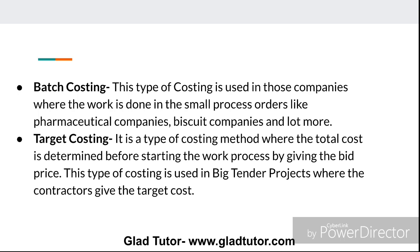The fourth type is target costing. It is a type of costing method where the total cost is determined before starting the work process by giving a bid price. This type of costing is used in big tender projects where contractors give the target cost. For example, if you are a contractor and want to submit a tender, you need to give your bid price beforehand.